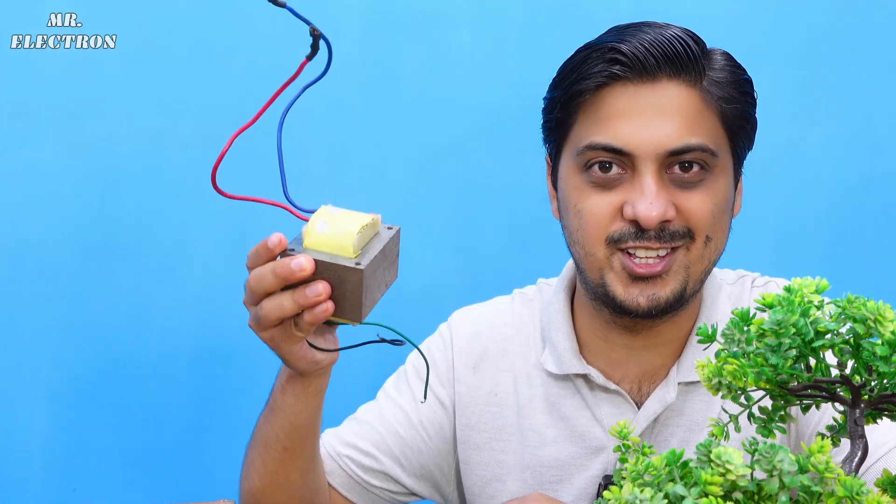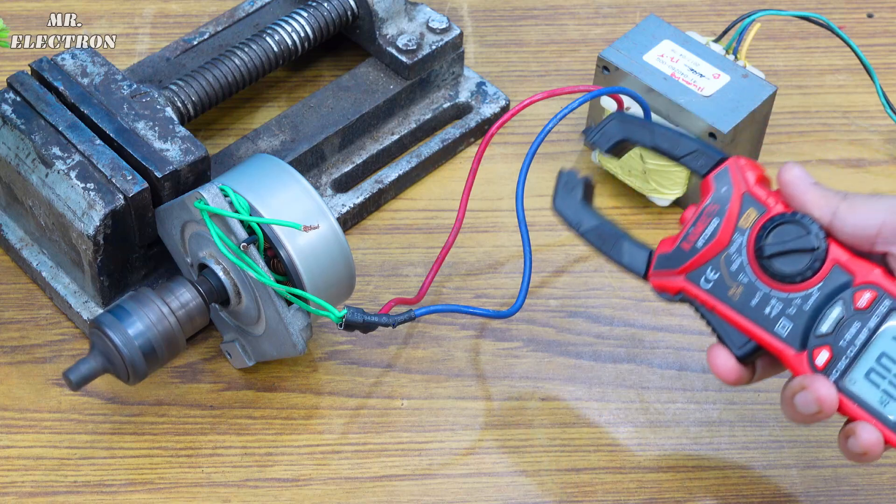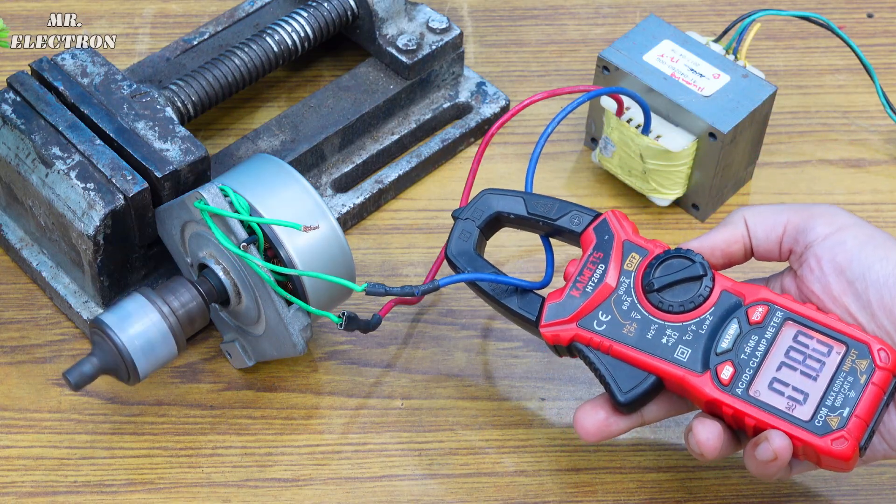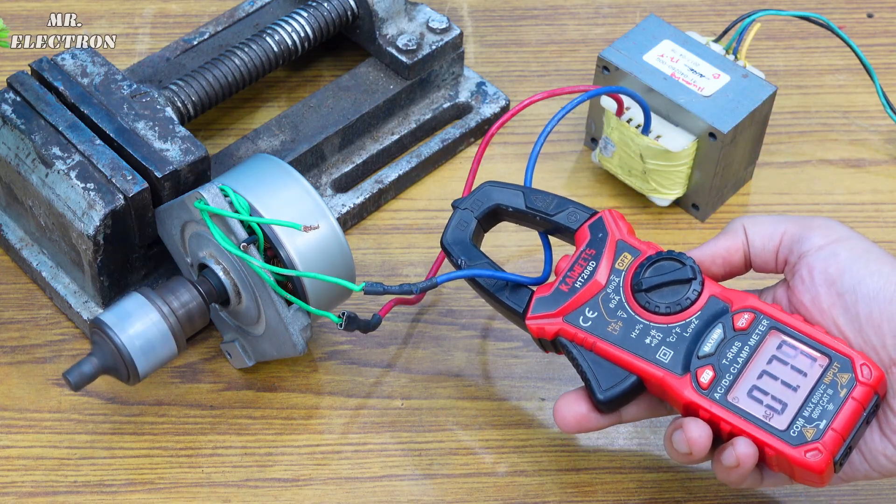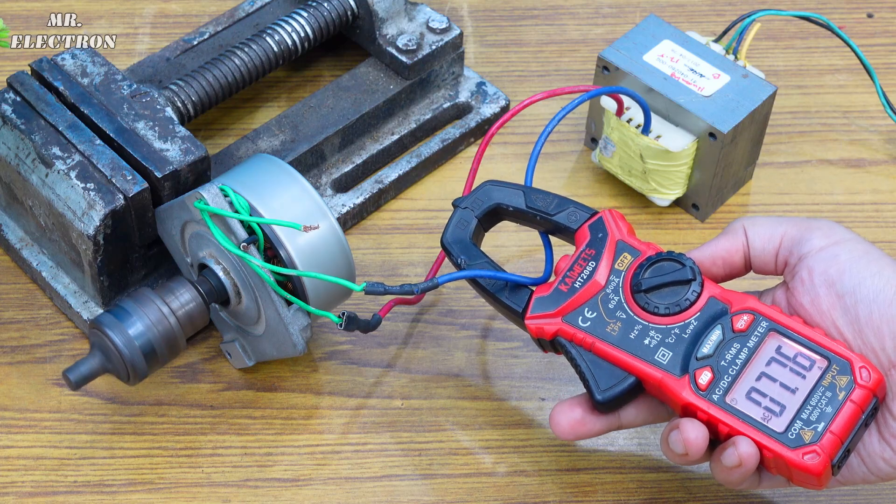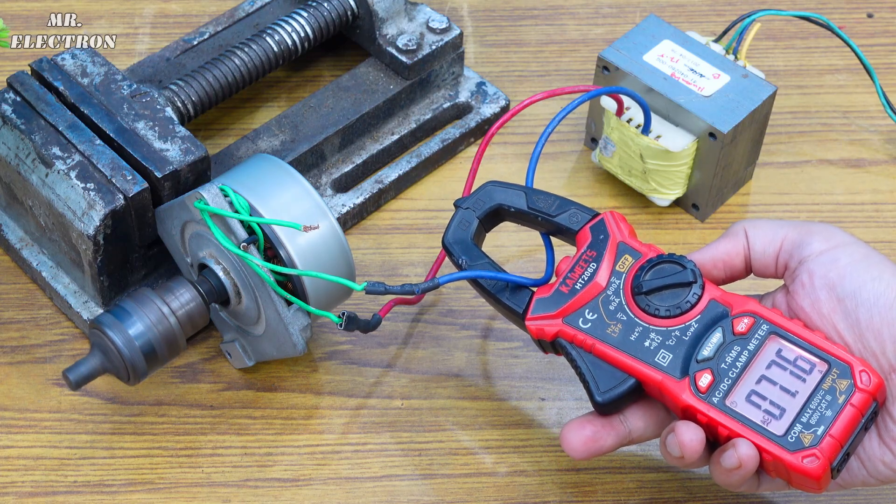Well, let's answer this after doing the current measurement for the current UPS transformer. Now if we check the drawn amperes, we can see that it is drawing around eight amperes AC.